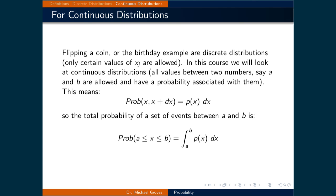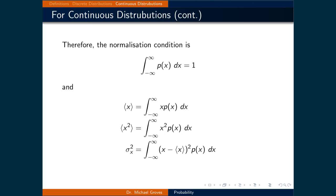The probability of a continuous set of events occurring between x and an infinitesimally small distance to the right of it, dx, is equal to the probability density p(x) times that tiny distance dx. To find the probability over a wider range, we take the integral over that range. Remember that an integral is just a continuous version of a sum. So the total probability of events between a and b is the integral from a to b of p(x) dx. We can rewrite all the discrete distribution values for continuous distributions, with integrals over minus infinity to infinity, since all possible events must be considered. Frequently, we can truncate the bounds since over large ranges the probability will be zero.